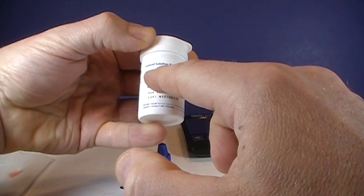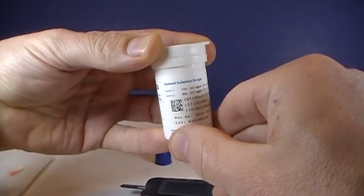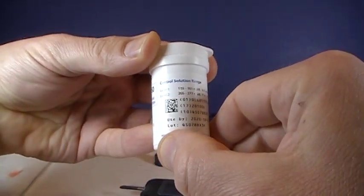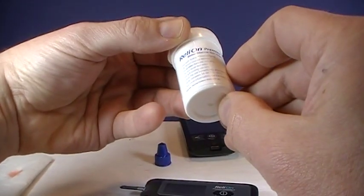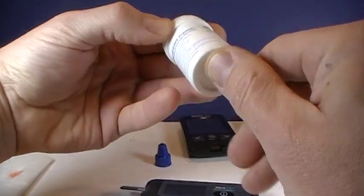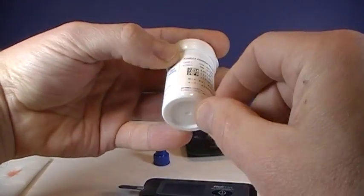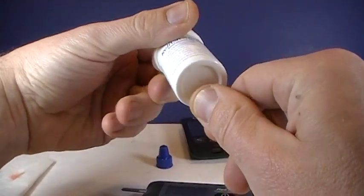If we're using control solution level two we'd want to see that reading fall between 205 and 227. These numbers are different or can be different for each bottle of test strips. So you want to refer directly to the bottle of test strips you're using in the control test.